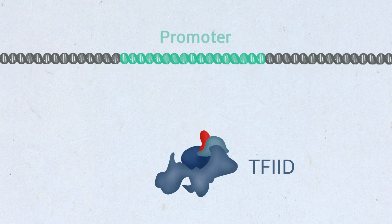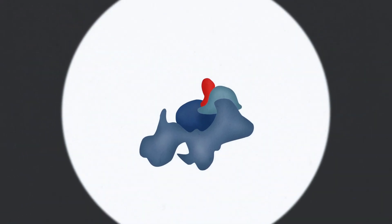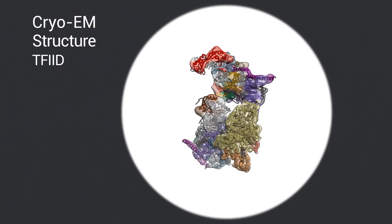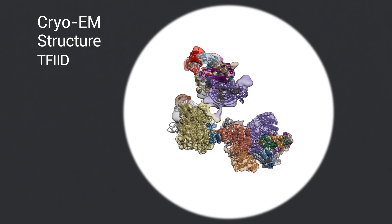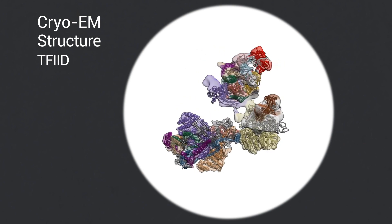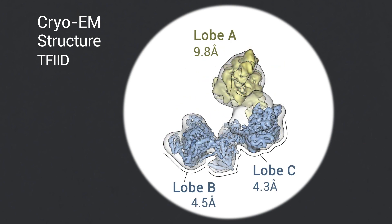A key challenge in understanding the molecular basis behind TF2D's recognition of core promoter DNA is the lack of a complete structural depiction of the complex. In this study, we report the cryo-EM structure of human TF2D with a resolution of about 4.5 angstroms for lobes C and B, and about 10 angstroms for lobe A.